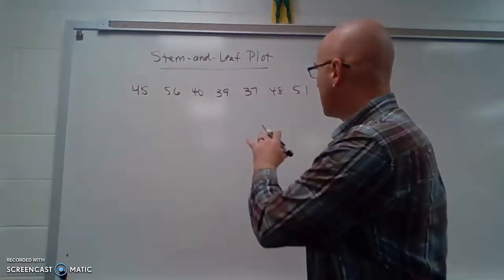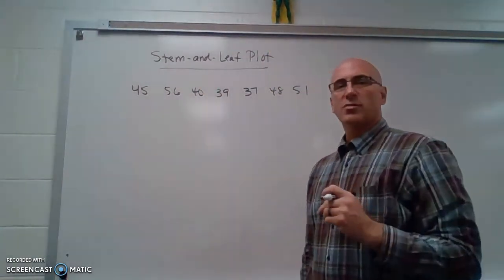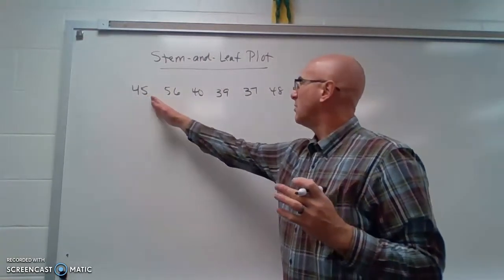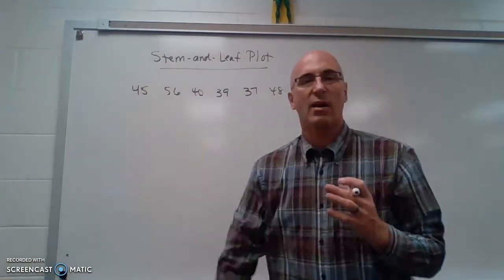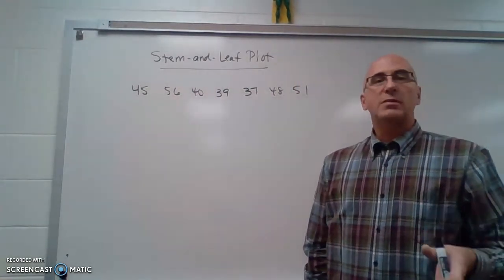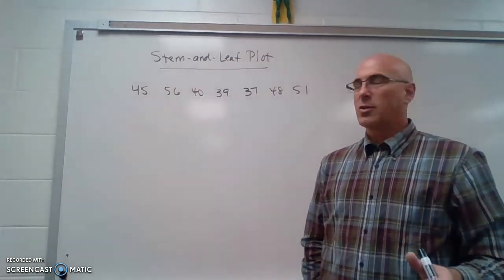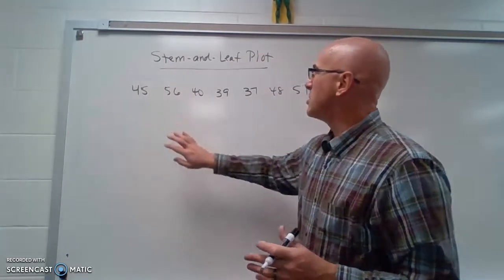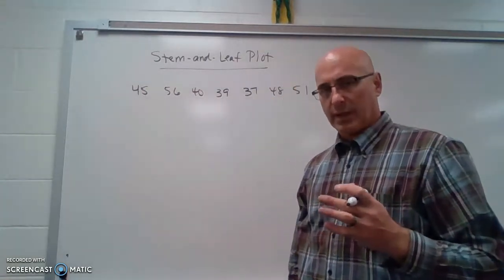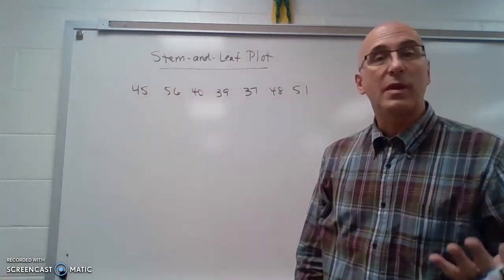So consider these numbers right here and they all look like they're within a general span of numbers. What we're going to first do is group them together by place value. So these are all two-digit numbers so we're going to group them together by the tens place and then we're going to also put them in order.